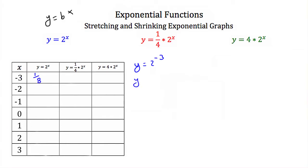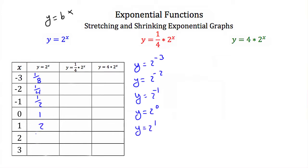If I plug in negative 2 for x, I'll get y is equal to 2 to the negative 2, and that's equal to 1 fourth. Plug in negative 1, we'll have y is equal to 2 to the negative first power, that's equal to 1 half. Next I plug in 0, I'll get y is equal to 2 to the zero power — anything to the zero power is just 1. If I plug in positive 1 for x, I get y is equal to 2 to the first power, that's just 2. Plug in positive 2, we get y is equal to 2 squared, that's equal to 4. And then we plug in 3 for x and we get y is equal to 2 to the third power, and that's just equal to 8.